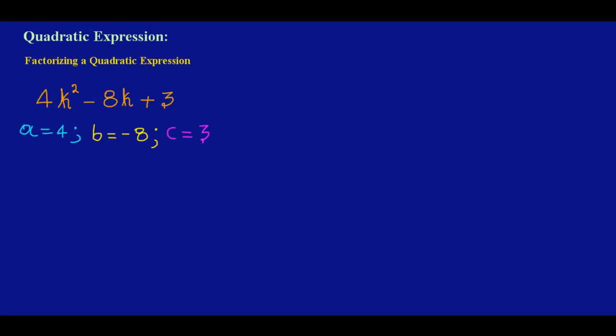Simply, the next step when factorizing a quadratic expression is you need to find the product of a×c. So now I'm finding my product a×c: a is equal to 4 times c which is 3, and when I multiply 4 times 3 my answer is 12. My product is 12.